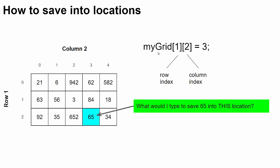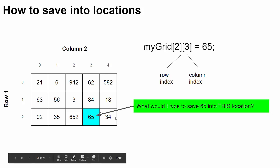Now you try. What would I have to type in here to save 65 into that particular location? Go ahead, pause the video. The answer is, you can see here 65 is at row two, column three. So you'd say myGrid[2][3] equals 65.